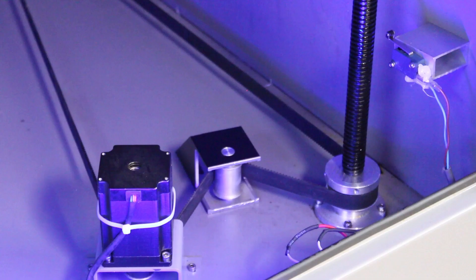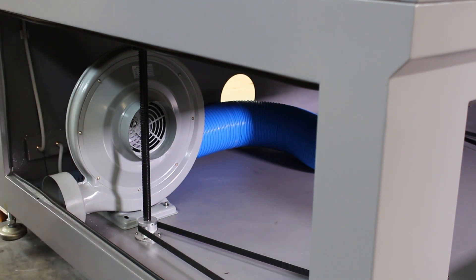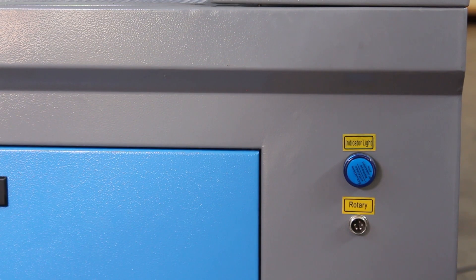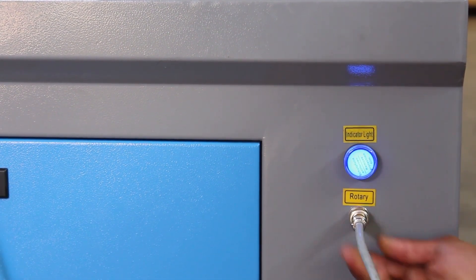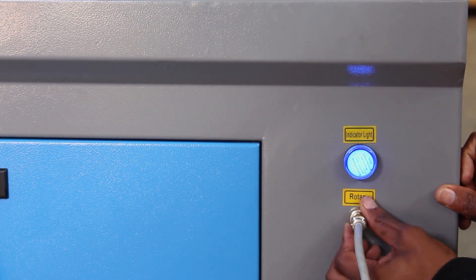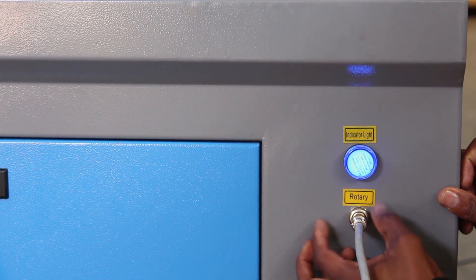We also have top and bottom sensors to limit the travel range of the table. In the corner you can see an extraction fan. This needs to be removed during installation as do the pipes. In the front end there is a blue light and a plug. This is for the rotary attachment. The rotary has a self-detection sensor and can switch from flat mode to rotary mode by itself as soon as you plug it in.